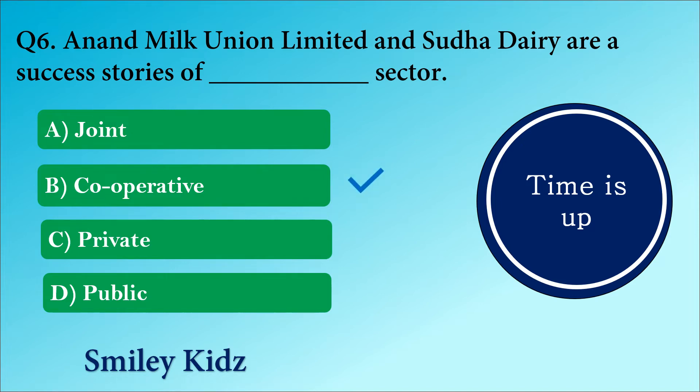The right answer is option B. Cooperative. Anand Milk Union Limited and Sudha Dairy are the success stories of cooperative sector.